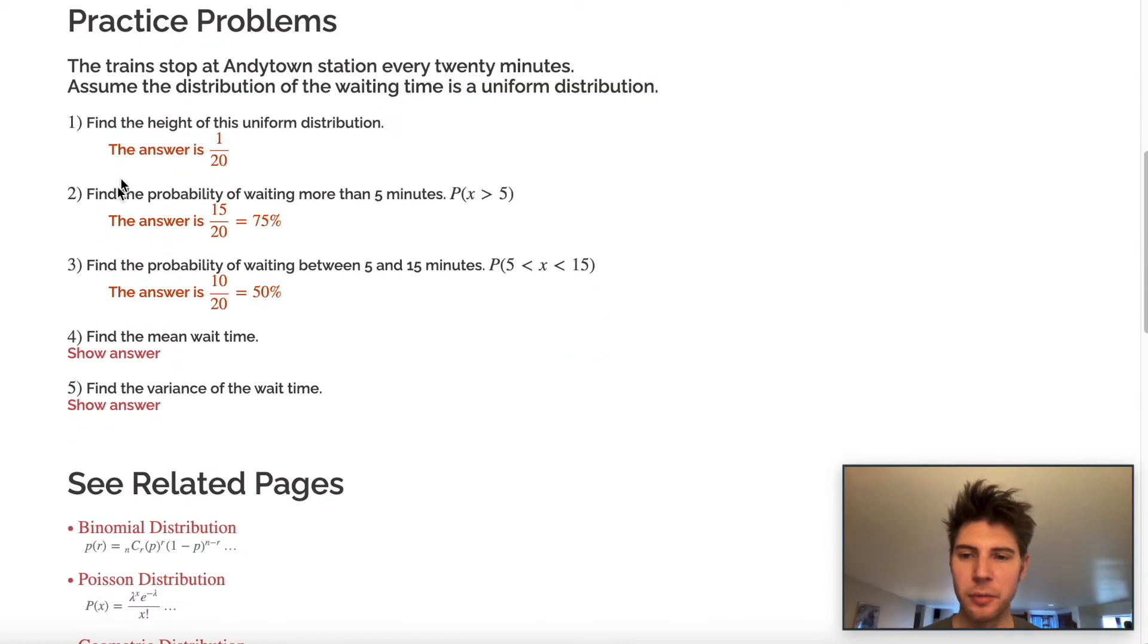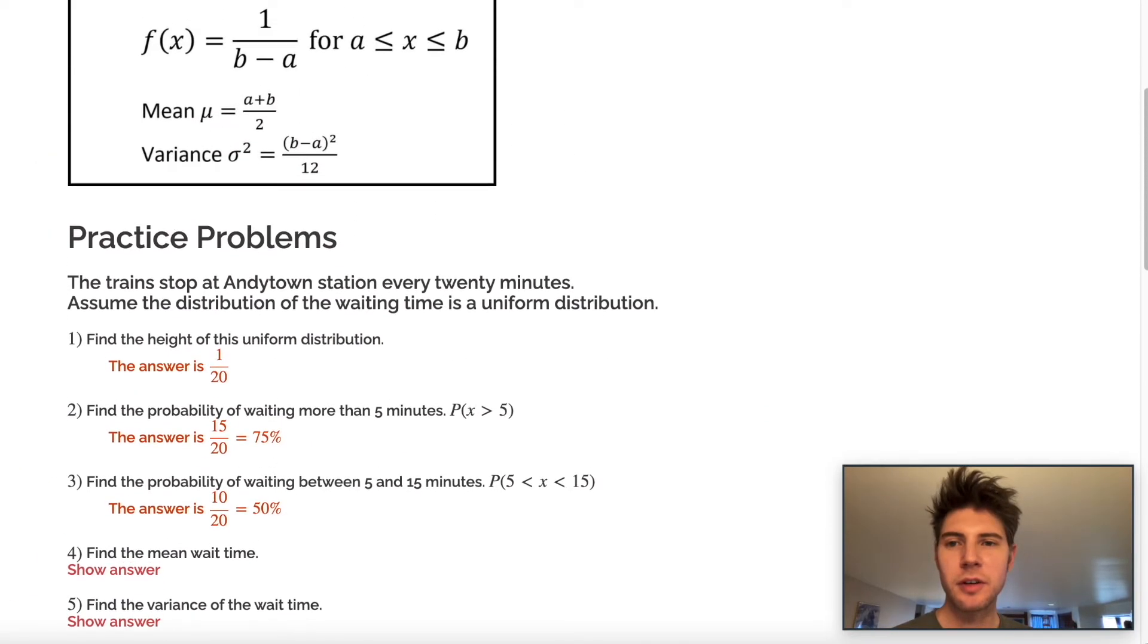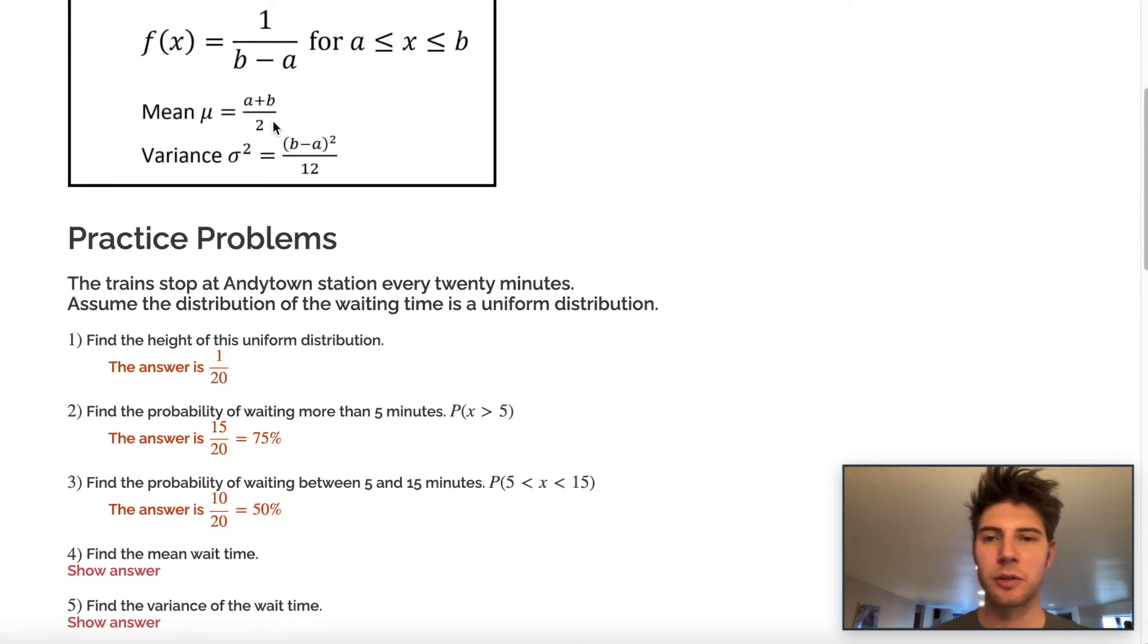So number four, number five are talking about the mean wait time and the variance of the wait time. So I'll go back up to the notes. So the mean is mu equals a plus b over 2. The a was equal to 0 because 0 minutes is the minimum. And then b was equal to 20. 20 minutes was the max. And then that's how we find our mu.